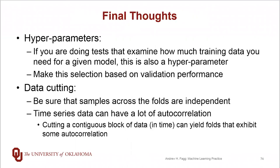A couple of final ideas: for hyperparameters, if you are actually doing a set of tests that examine the question of how much training data you need for a given model type, then in some sense the amount of training data is yet another hyperparameter. This becomes part of the selection process we'll go through. Of course, this also increases the number of hyperparameter sets that we would actually consider.